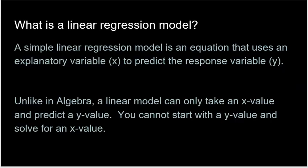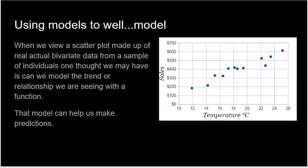So what is a linear regression model? It's a simple linear regression model — an equation that uses an explanatory variable x to predict the response variable y. Unlike in algebra, a linear model can only take an x value and predict a y value. You cannot start with a y value and solve for an x value. A linear regression model is literally a line that can be used to take a temperature and predict the sales at that given temperature.